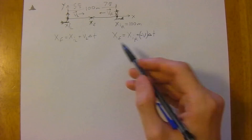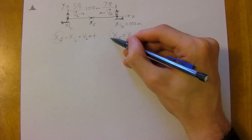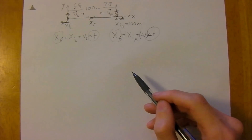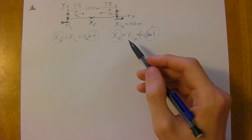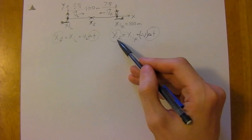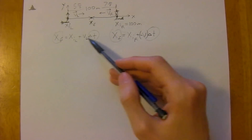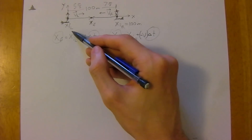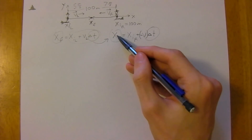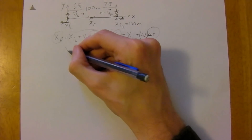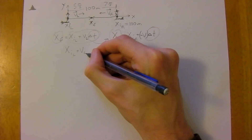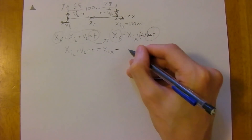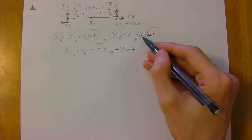We can solve this in two ways since we have two unknowns and two equations. Anytime you have two unknowns and two equations you can solve for one unknown, then plug back in for the other. We set the two expressions equal because both equal x_final: x_initial_left + v_left × Δt = x_initial_right − v_right × Δt.